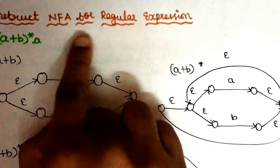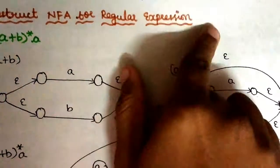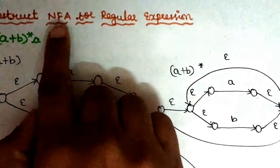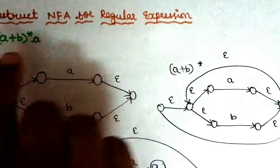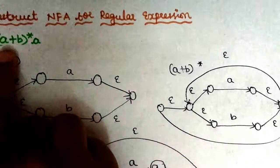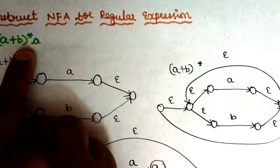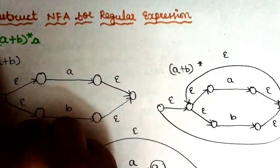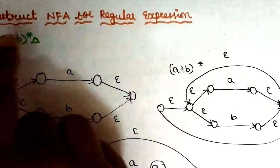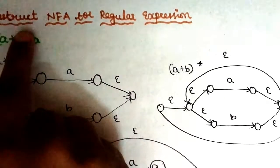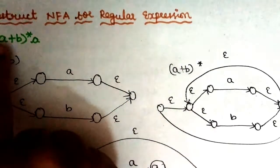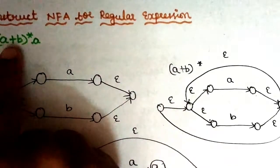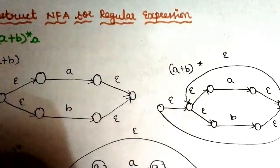Now let's look at an example problem: Construct NFA for the regular expression equivalent. You can say it is equivalent to NFA. The regular expression is A plus B, whole closure, of A. You solve it starting with what's inside the bracket — you can see A plus B.